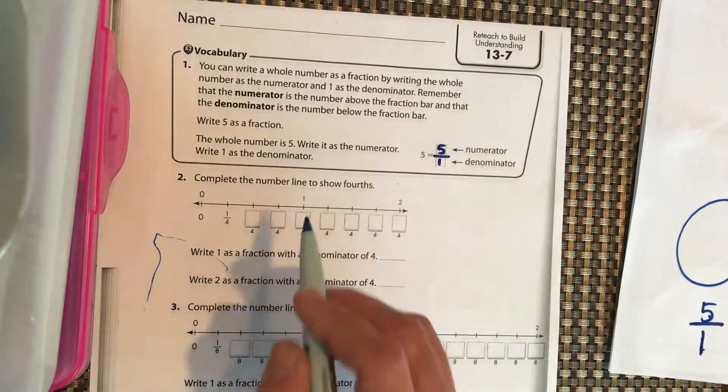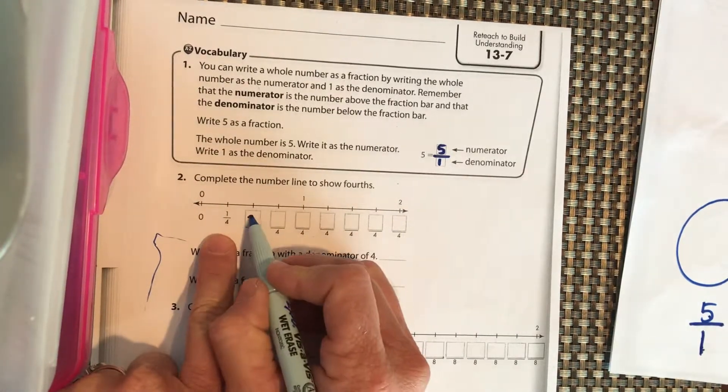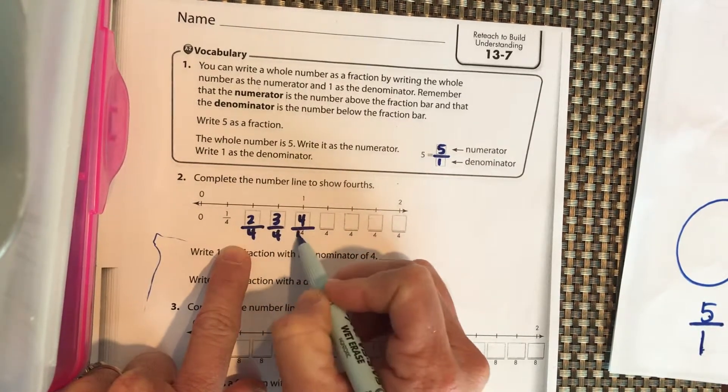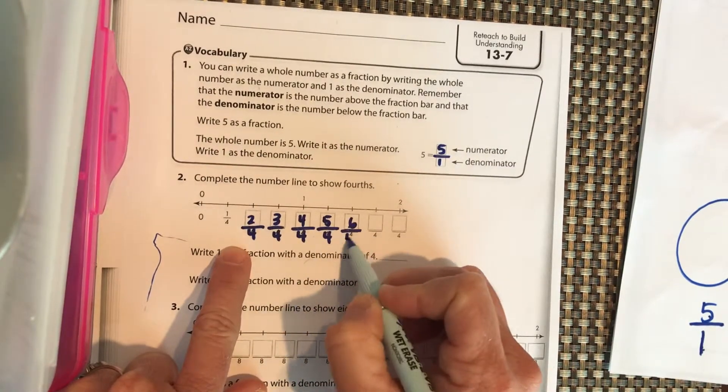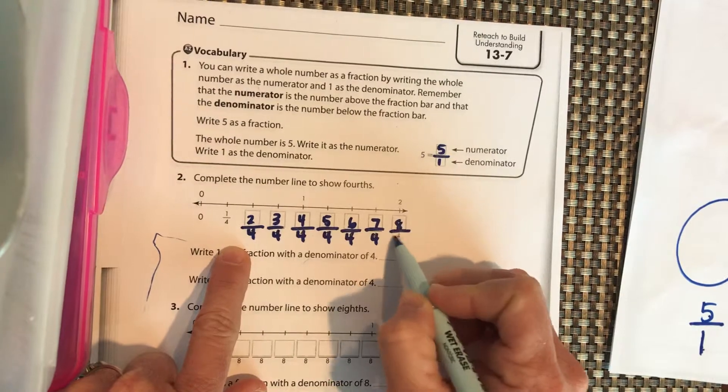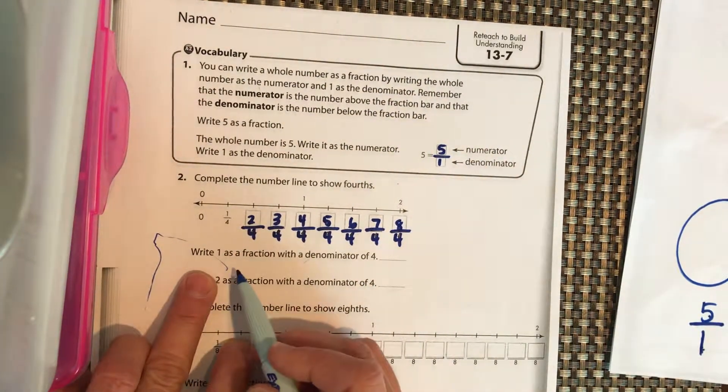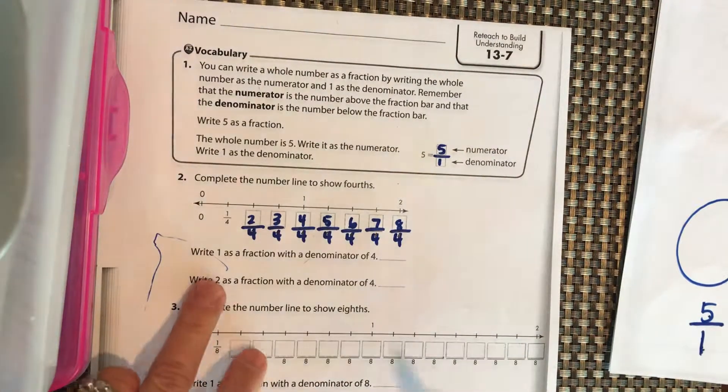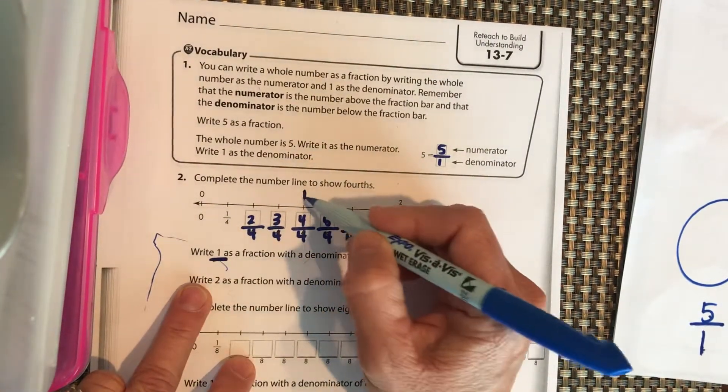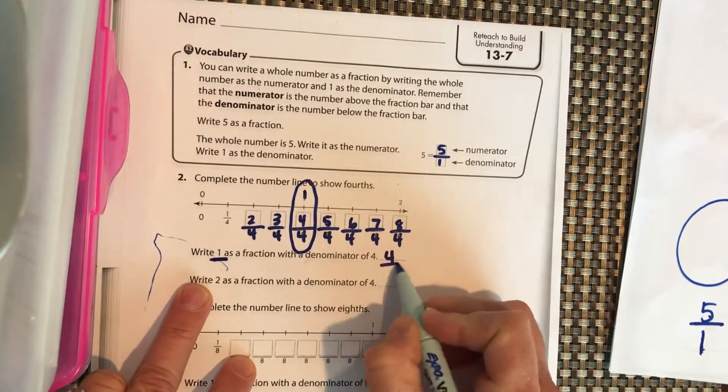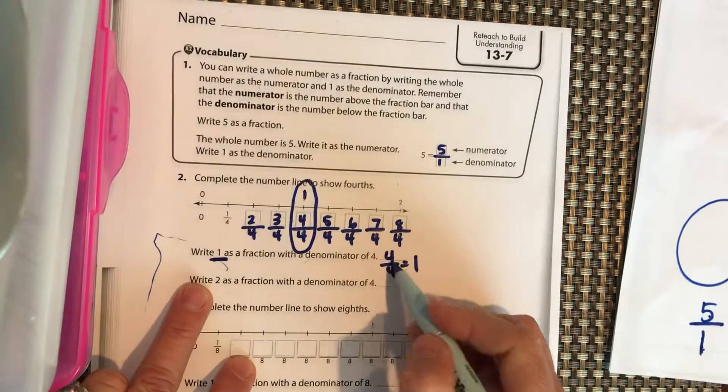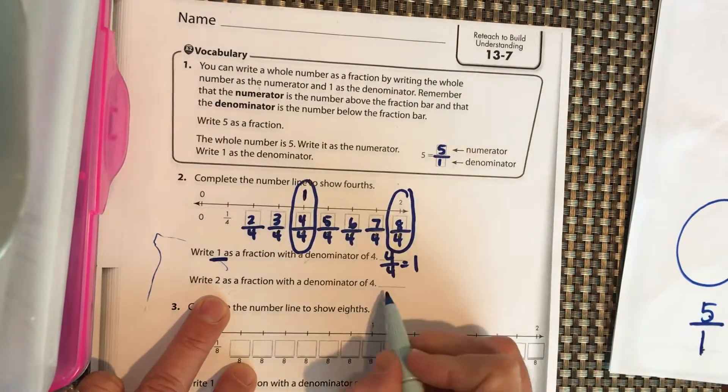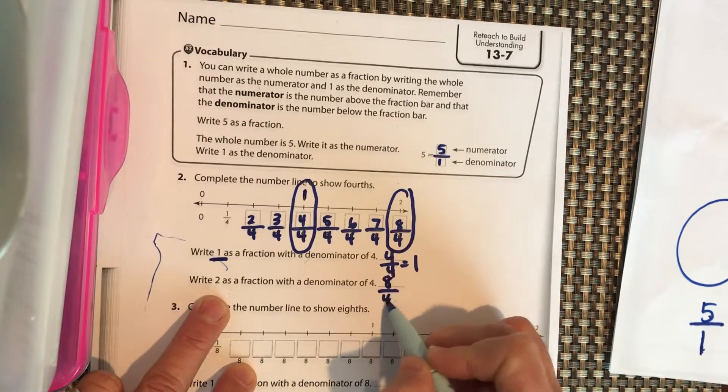So let's complete the number line showing fourths. So we have 1 fourths, 2 fourths, 3 fourths, 4 fourths, 5 fourths, 6 fourths, 7 fourths, and 8 fourths. We want to write 1 as a fraction with a denominator of 4. We have to write 4 fourths because that's going to equal 1, 4 divided by 4. This whole number 2, they want us to write that as a fraction with a denominator of 4, which means we have 8 fourths, and 8 divided by 4 equals 2.